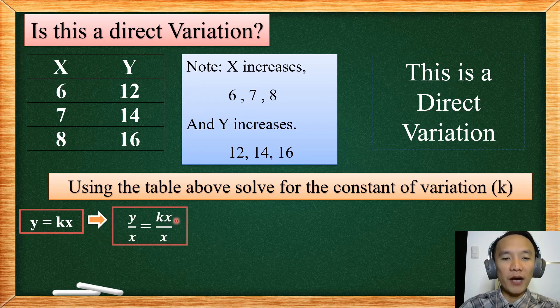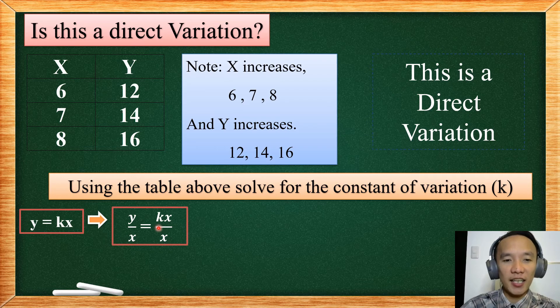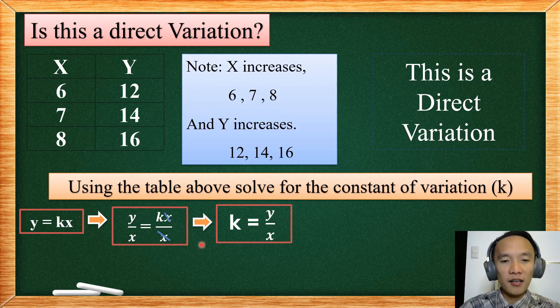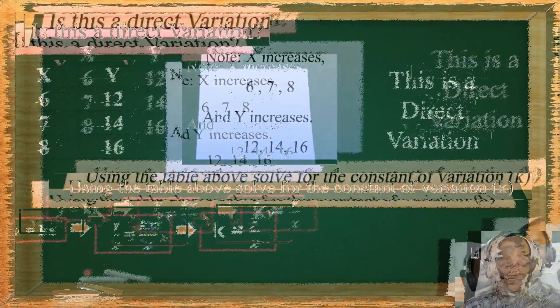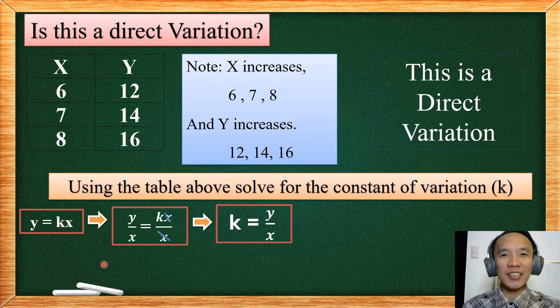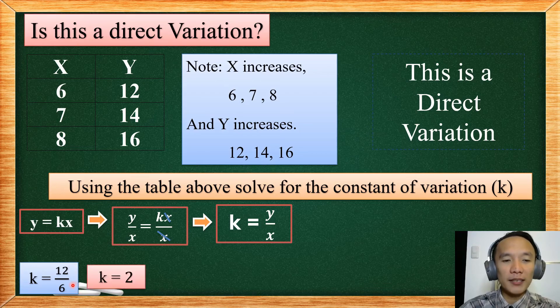To find that, we simply divide both sides by X so that what will remain on the other side is just the letter K. So we will have K and Y over X. To find the value of our K, let us just find an ordered pair. So we will use 12 and 6. So your Y is 12, your X is 6. Divide 12 by 6 so you will have 2.